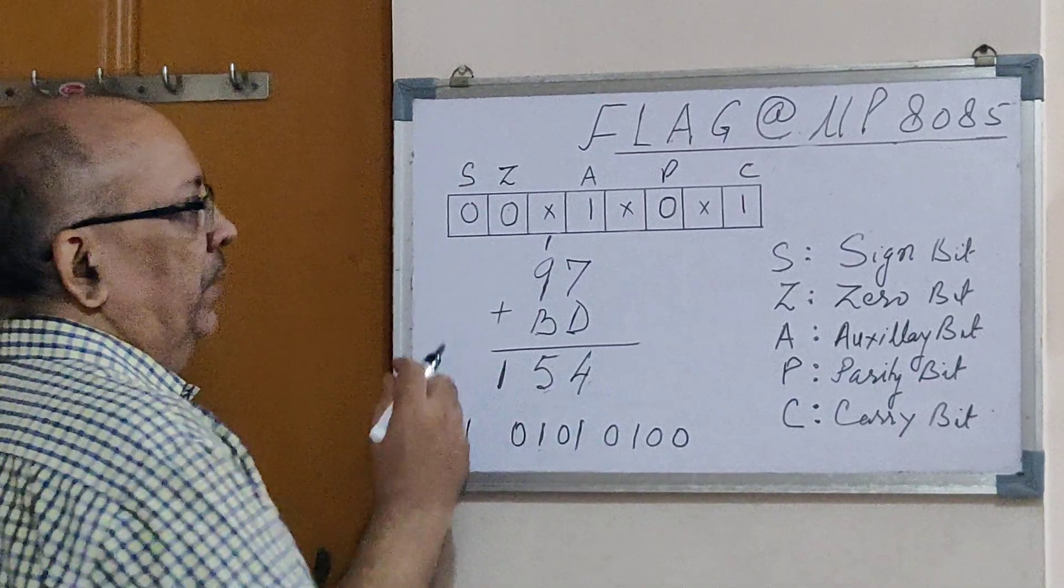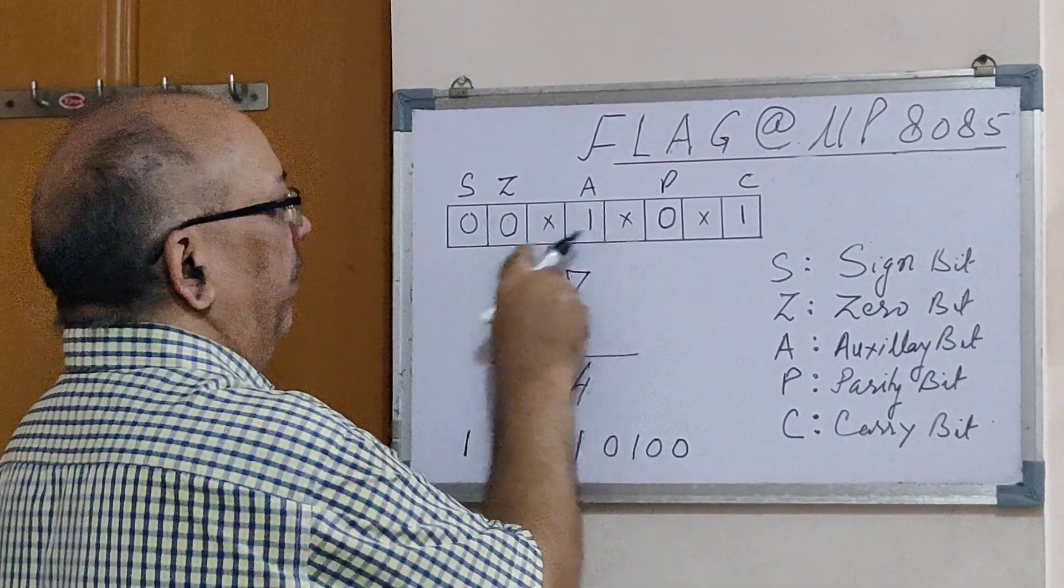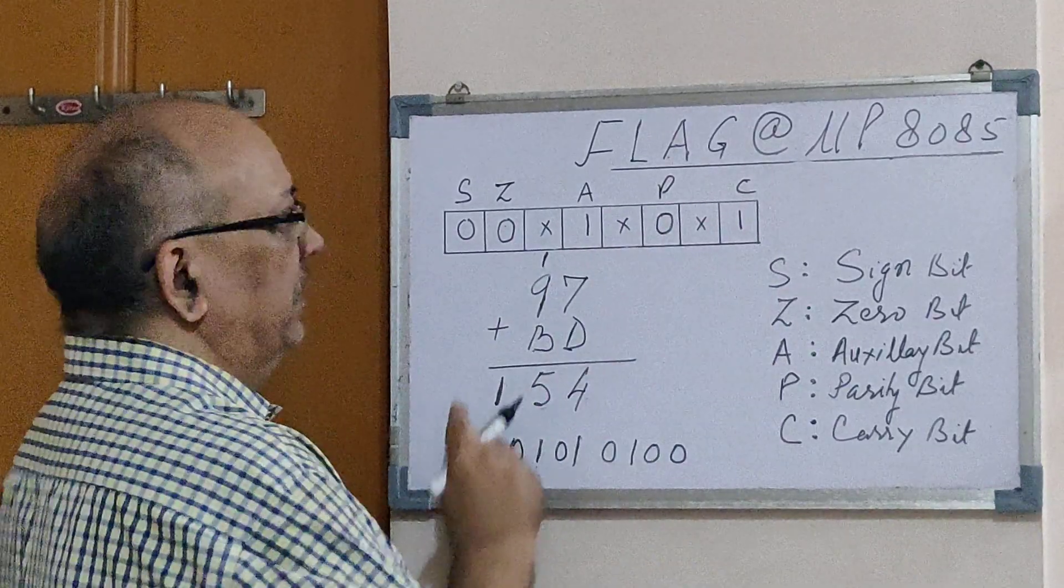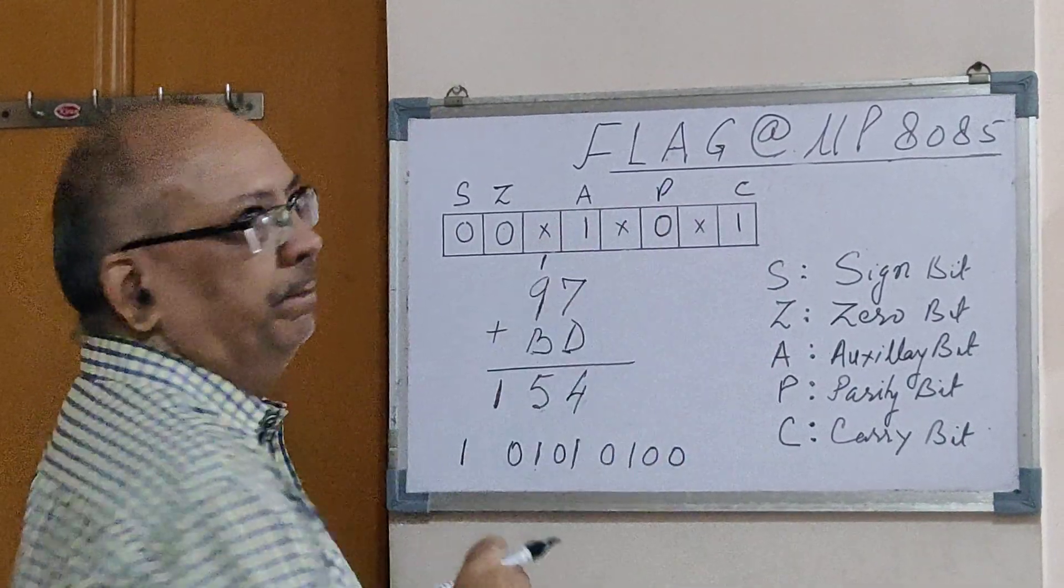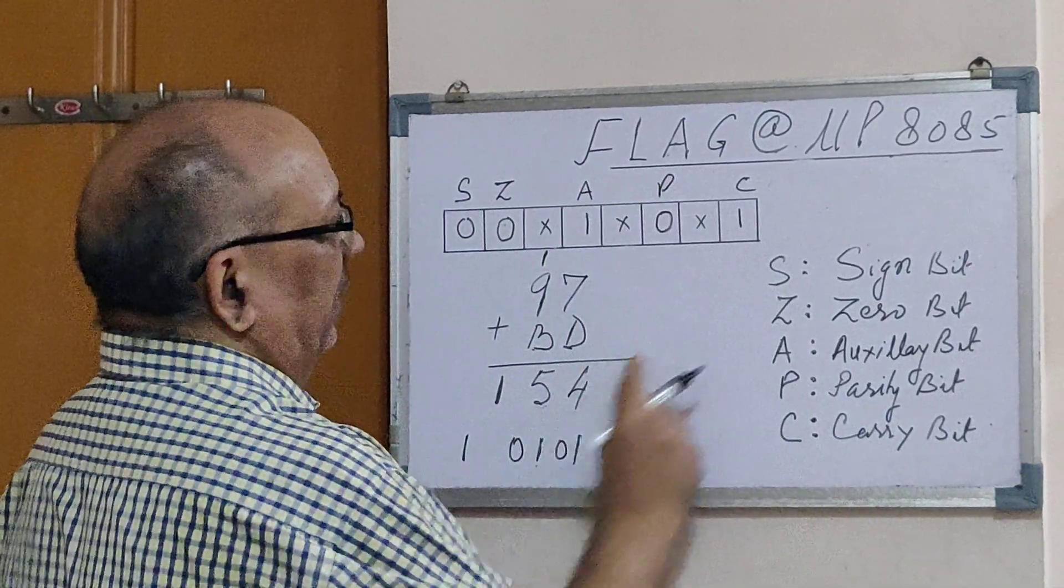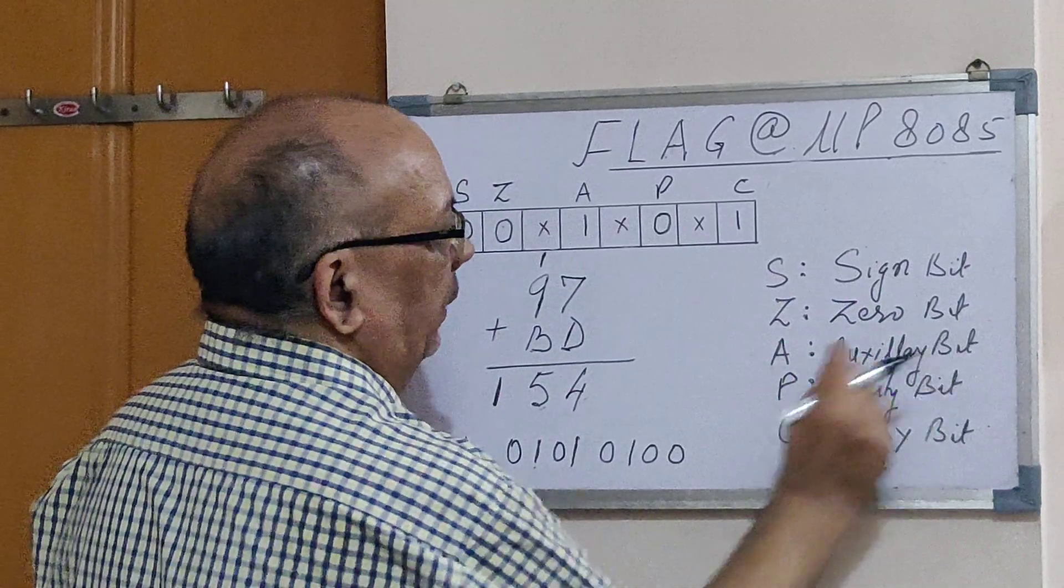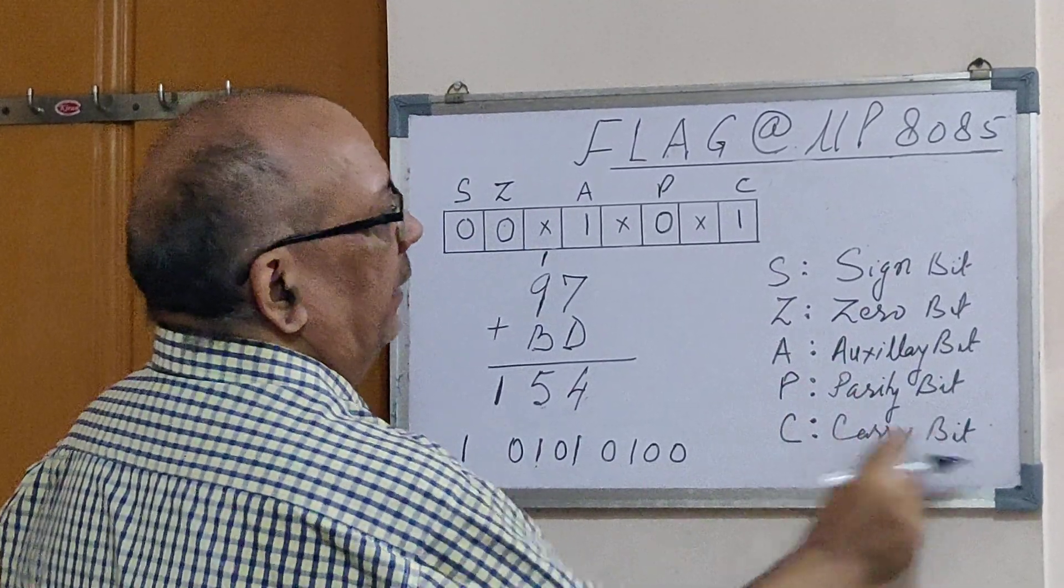Let us see with a simple example. Anyway, it's an 8-bit register where you got actually five bits which are active and there are three bits which are don't care. These five bits which are active can be defined as sign bit, zero bit, auxiliary bit, parity bit, and carry bit.